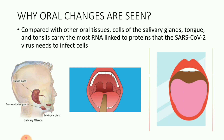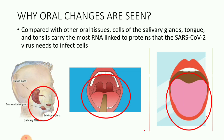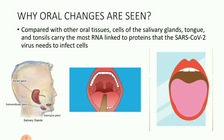So then why are oral changes seen? Compared with the other oral tissues, cells of salivary glands, tongue and tonsils carry the most RNA linked to proteins that the coronavirus needs to infect the cells. The ACE2 receptors are most abundantly present in the oral tissues — specifically in the salivary glands, tonsils and tongue. That is why oral changes are seen most commonly in these parts.